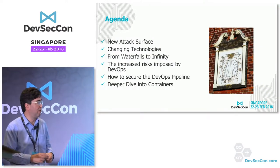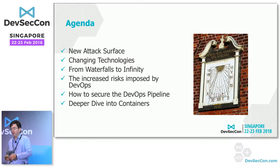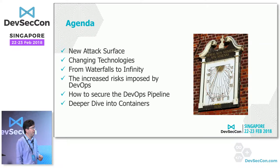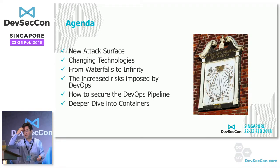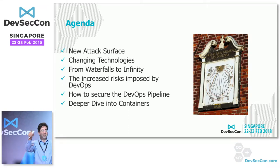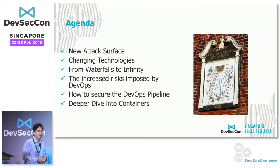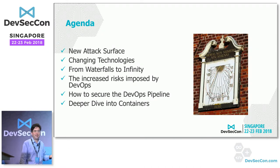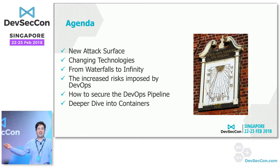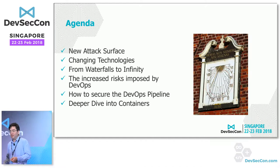I'll talk about the new attack surface that most organizations are exposing themselves to as they make the transition to DevOps. A lot of the vulnerability assessment techniques that have historically been used are not really capable of addressing this new attack surface. We'll go from waterfall to infinity — I use 'infinity' because DevOps and agile cycles are represented that way — covering increased security risks, specific tools for the DevOps pipeline, and a deeper dive into containers.